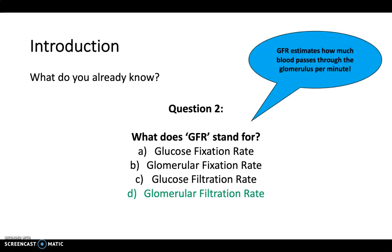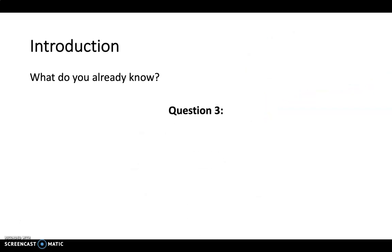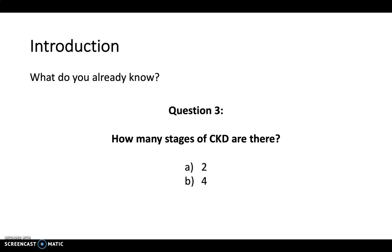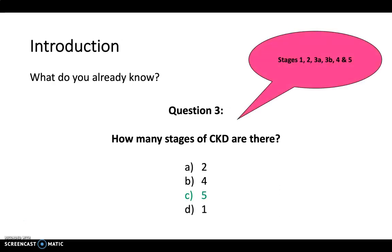The answer is D, glomerular filtration rate. It estimates how much blood passes through the glomerulus per minute. And finally, how many stages of CKD are there: two, four, five, or one? The answer is five — you've got stages one, two, three A, three B, four, and five. Don't worry if you didn't know the answers to these questions because we're going to go through them again at the end of the video.